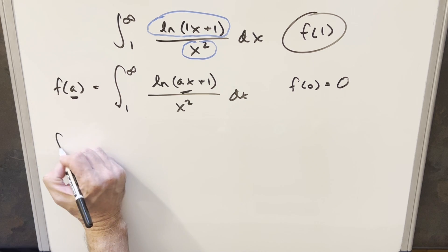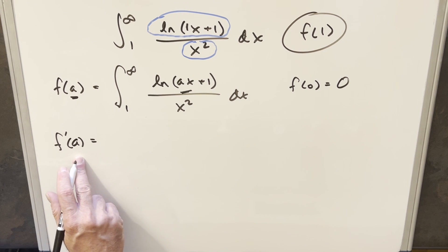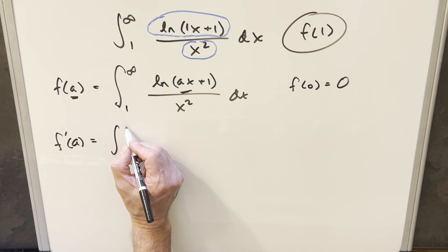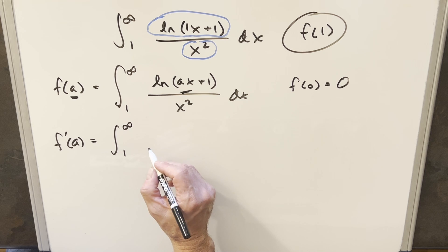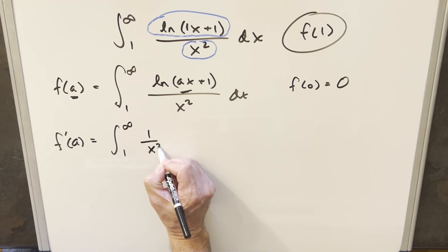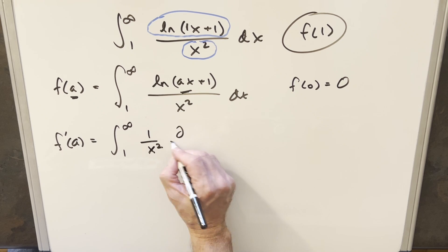So I'm going to go ahead and try to find a derivative on this. But we want the derivative with respect to a in this case. We'll differentiate inside the integral sign. For this 1 over x squared, that's just going to be a constant with respect to a, so we'll bring that out front. And then we'll do the partial derivative with respect to a of this part.